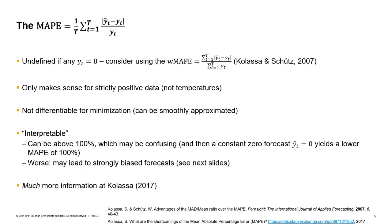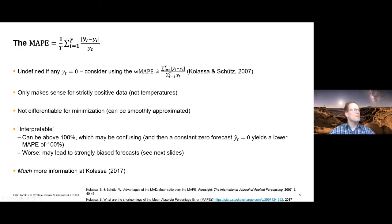Let's talk about the MAPE. As I said, it's very common in supply chain forecasting. First of all, if any one of the actual values Yt is zero, the entire thing becomes undefined. Some software is rumored to simply disregard the error for time periods where Yt is zero — that is not good practice, because that amounts to saying we don't care what the forecast is if the actual is zero. But typically we care very much whether we're forecasting 10 or 100 units when we're selling zero. Better practice is to use the Weighted MAPE, which can handle some zeros.